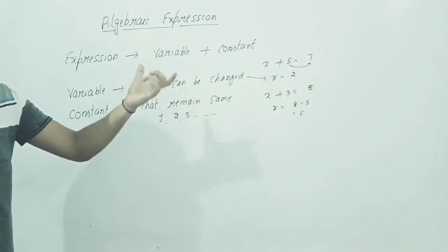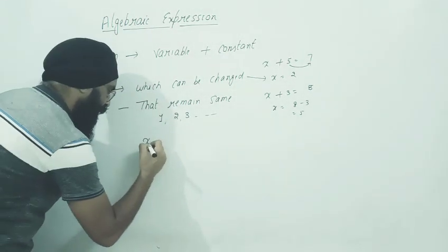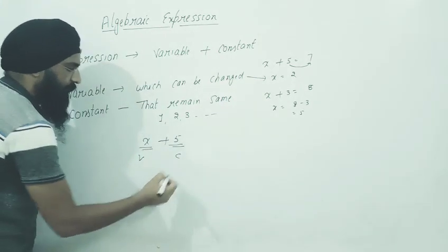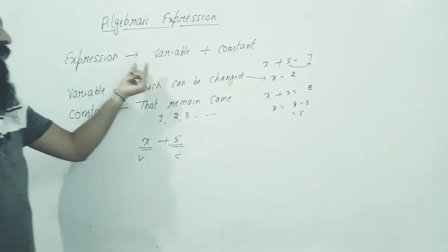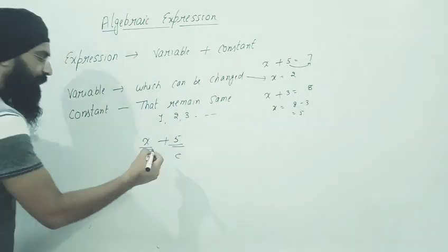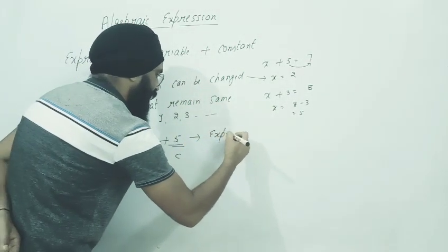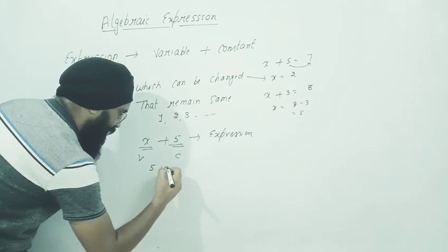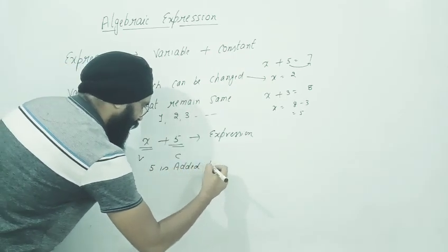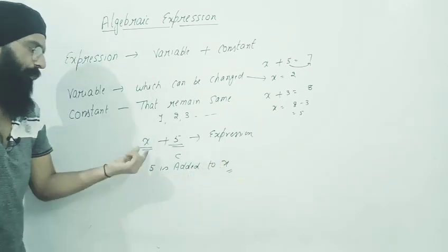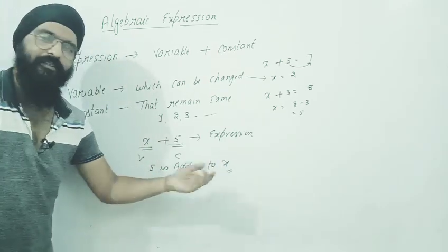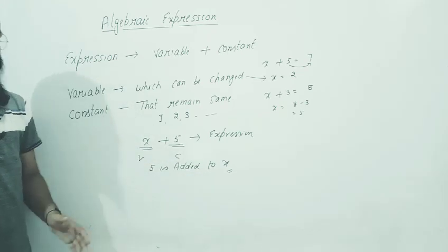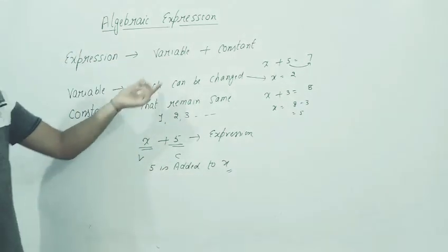Variable and constant - when we combine them together, we form an expression. Like x plus 5. This is an expression in which we have a variable and that is our constant. So when you're asked to write an expression, you'll write the combination of variable and constant. That is expression. We can write this expression as: I am adding 5 to x, so we can write 5 is added to x, or x is added to 5. You can say both ways - 5 is added to x or x is added to 5, because in both cases we are doing addition.